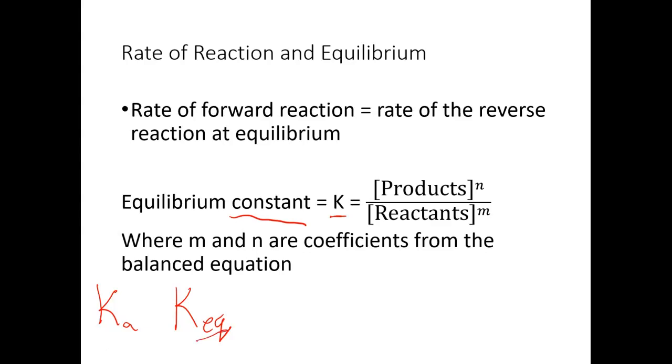So just be aware that there may be a subscript here that will specify what K you're working with. The general equation is K equals—these brackets mean concentration of whatever's in the brackets. So if I have NaCl in brackets, then that means the concentration of NaCl or sodium chloride here. Typically we're working in molarity. We'll talk about some of the other units that you may look at later.